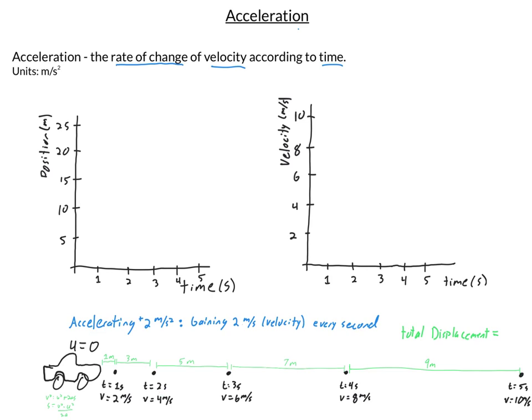So from 2 seconds to 3 seconds, we go from 4 meters per second to 6 meters per second. Each second, the velocity goes up by 2 more meters per second. This has a very interesting effect on how far the car travels — in the first second, we start at zero velocity and speed up to 2 meters per second, so we go a little distance.